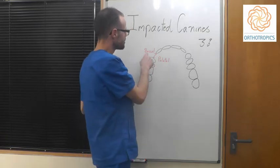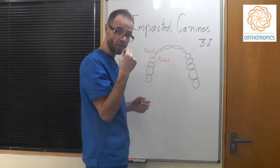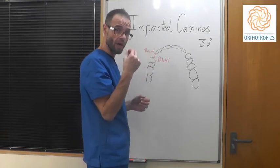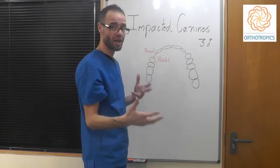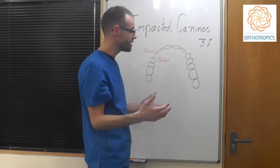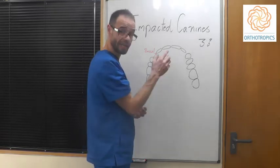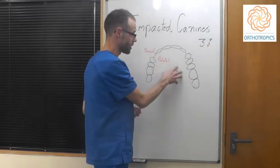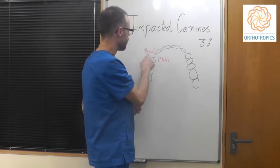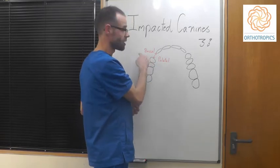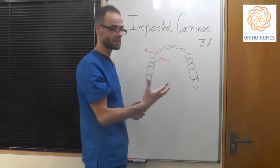When impacted canines get stuck, they're normally going to get stuck either on the inside — the palatal side, where the tongue and the palate are — or they get stuck on the outside, called the buccal side.